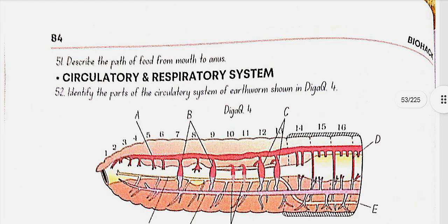The path of food from mouth to anus: mouth → buccal cavity → pharynx → esophagus → muscular gizzard → stomach → pre-typhosolar part of intestine → typhosolar part of intestine → anus.